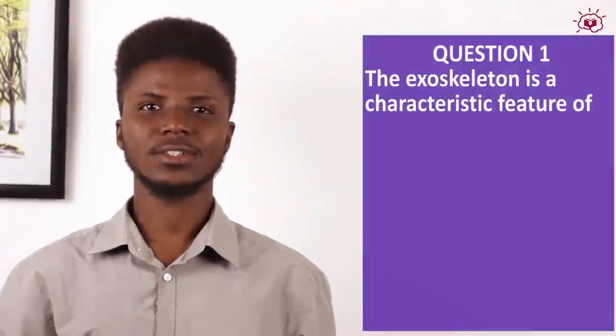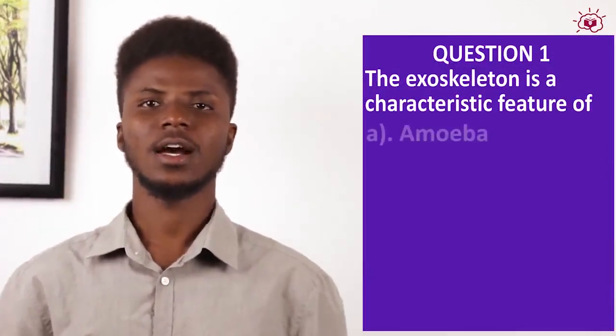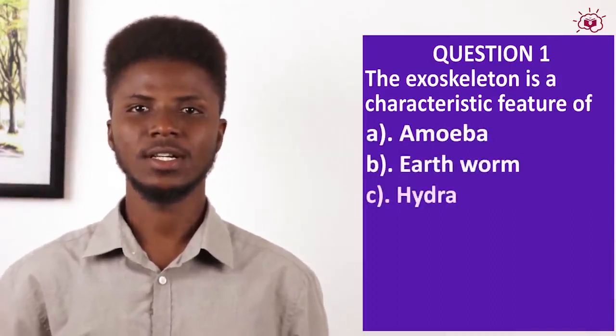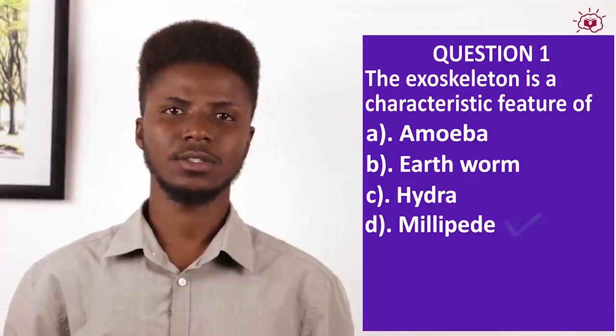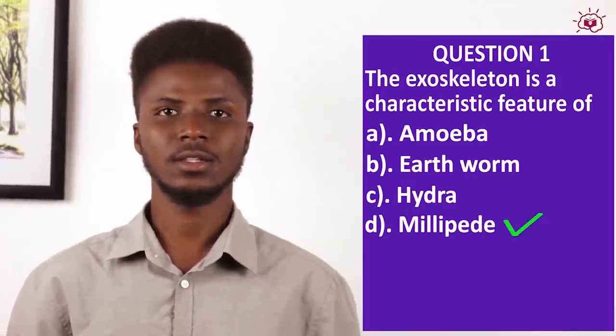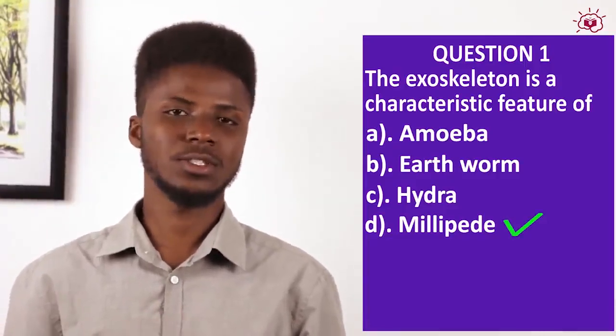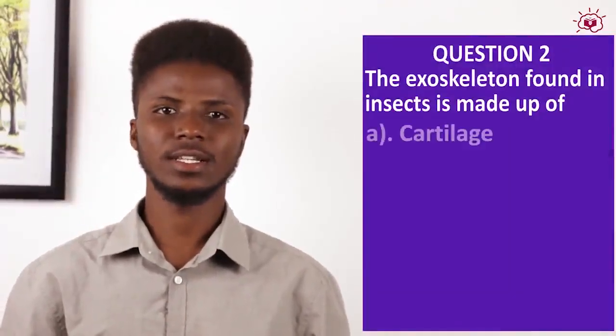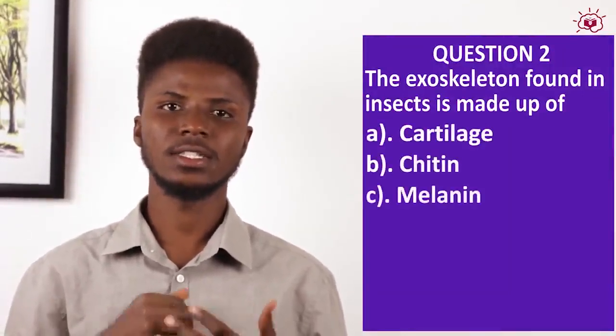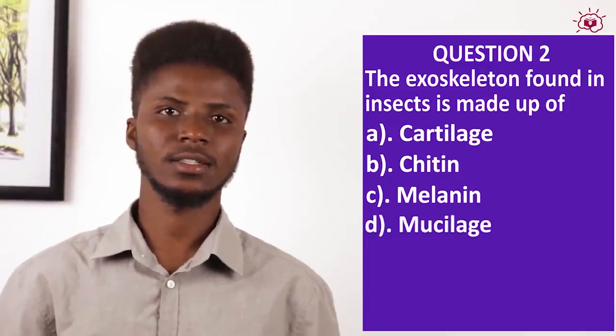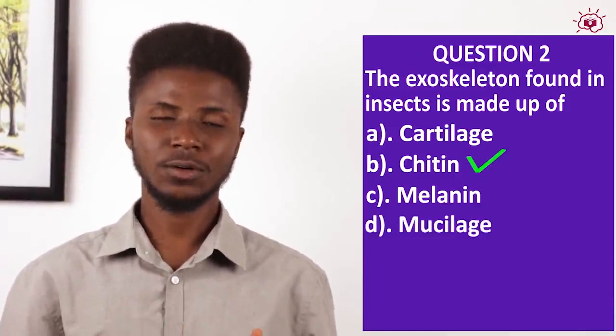We've come to the end of the lesson. Let us treat some past questions. Question 1: The exoskeleton is a characteristic feature of — a) amoeba, b) earthworm, c) hydra, d) millipede. Answer: millipede, because it is one of the arthropods that uses the chitin exoskeleton. Question 2: The exoskeleton found in insects is made of — a) cartilage, b) chitin, c) melanin, d) mucilage. Answer: chitin.